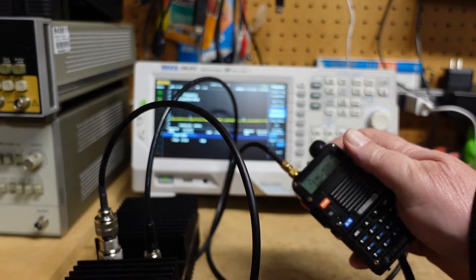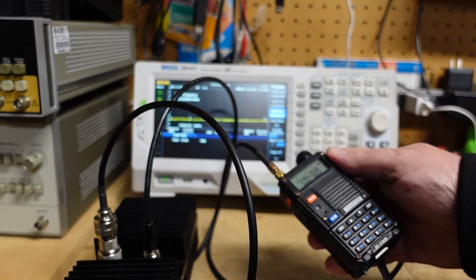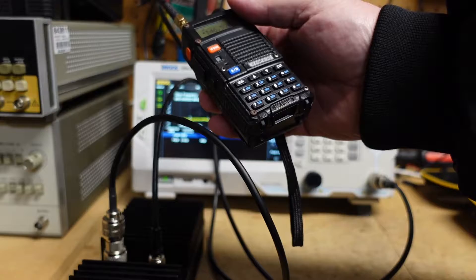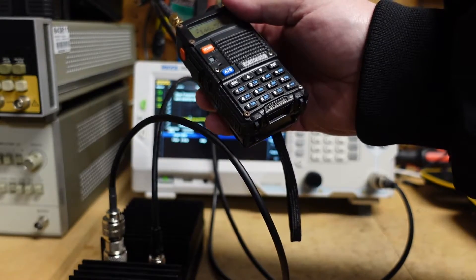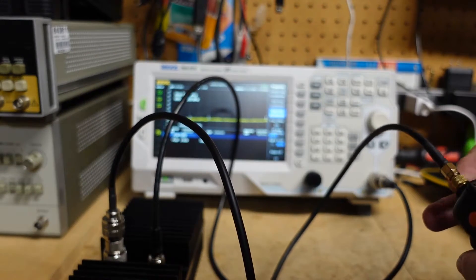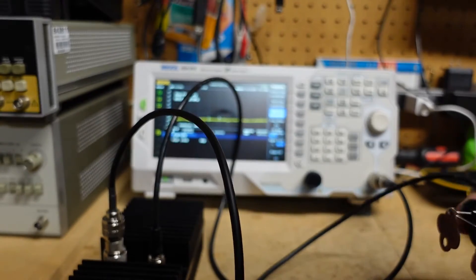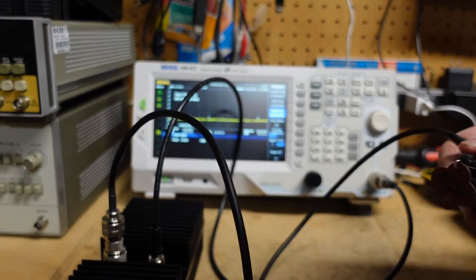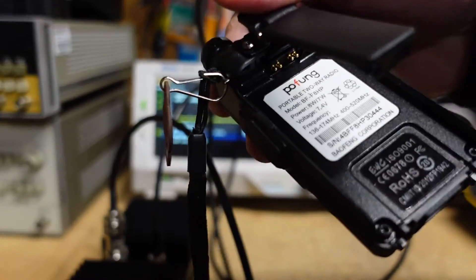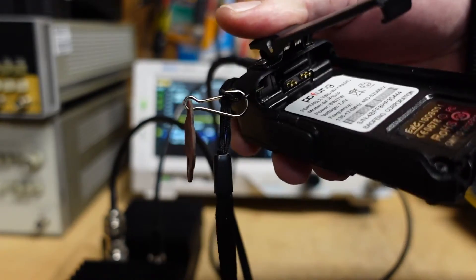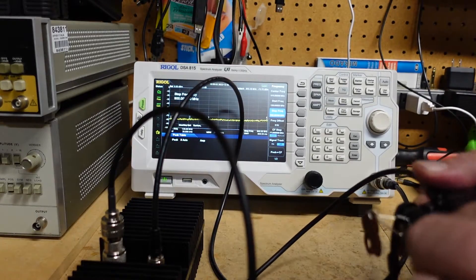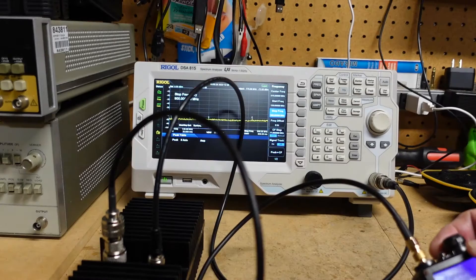We've got a Baofeng UV-5R. This looks like a legitimate one. I'm not sure. Or no, excuse me, it's not a UV-5R. It's an F8HP, which is the fancy Fang. This is pretty old. Let's take a quick look inside this thing and see it does not have the FCC markings inside it at all. And that's about it. So I don't expect much out of this.